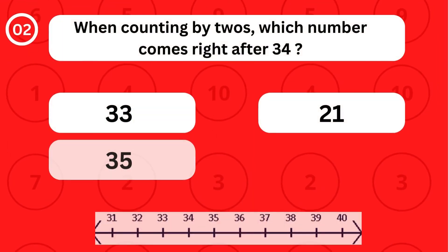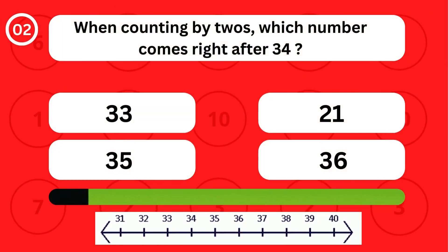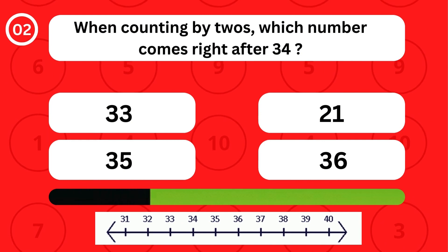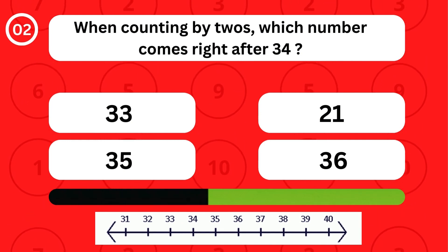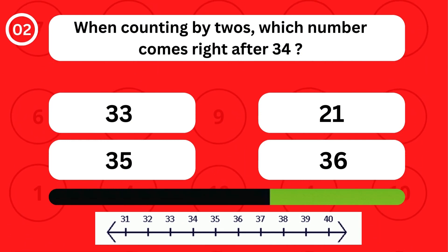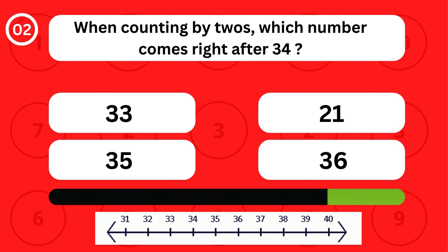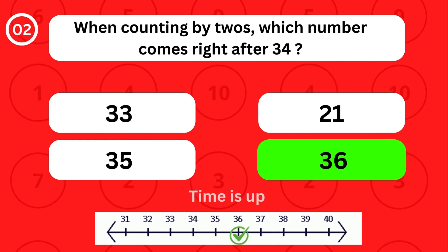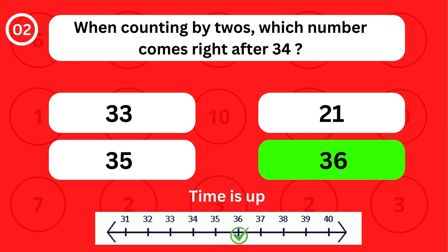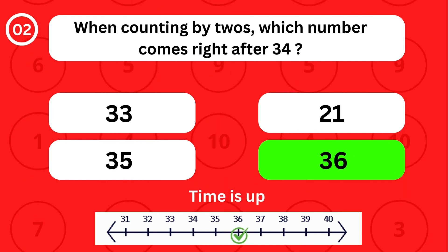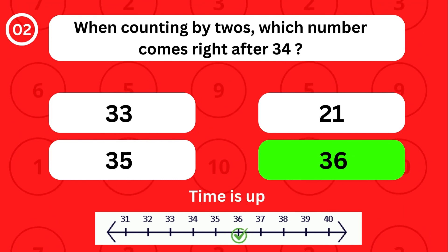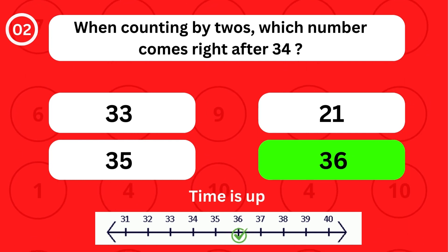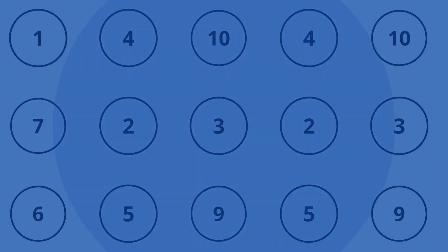When counting by twos, which number comes right after 34? When counting by twos, the number 36 comes right after 34.